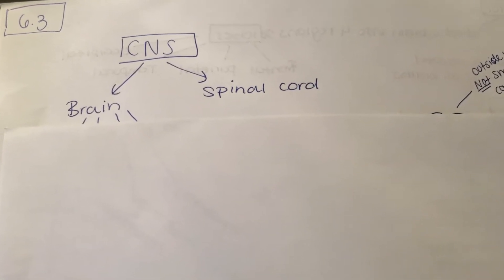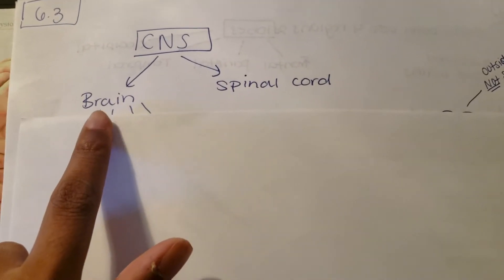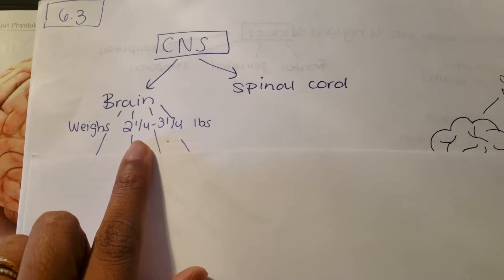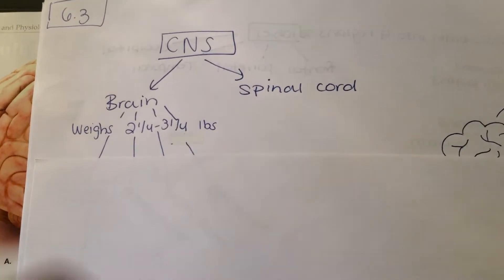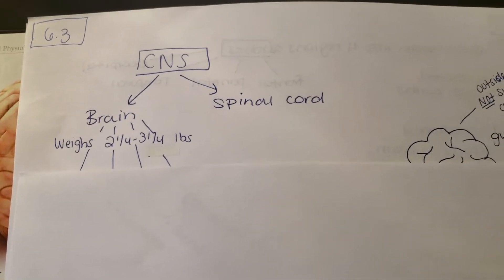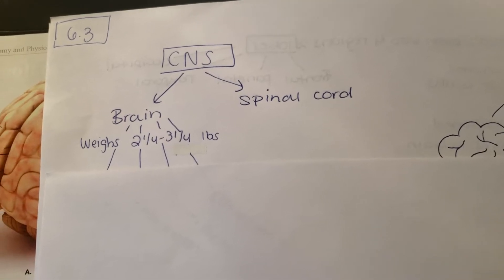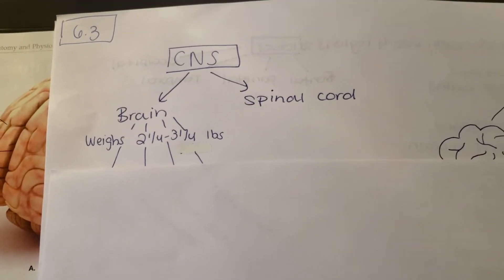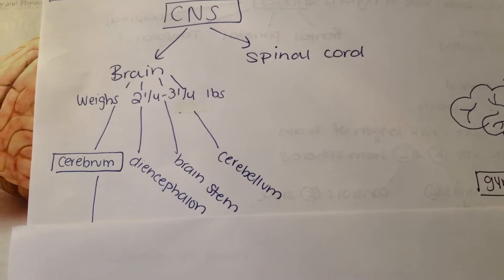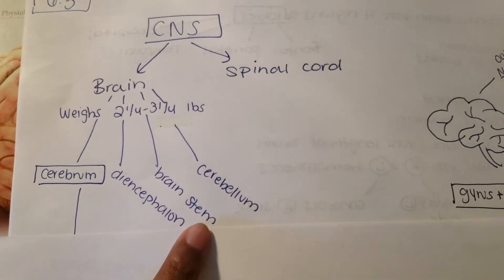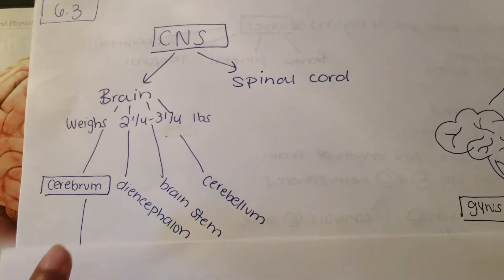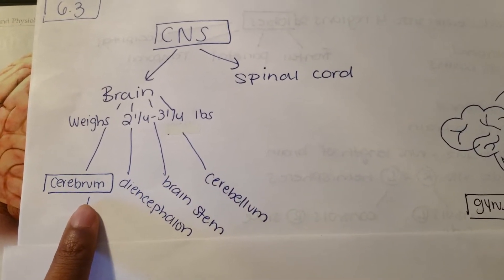Right now we're going to focus on the brain. A typical brain actually weighs between two-fourths to three-fourths of a pound, which relative to everything else in your body isn't that much. People have related brain size and weight to intelligence, but don't go comparing your brains to other people's. The brain is broken down into four regions: the cerebrum, the diencephalon, the brain stem — which is further broken down into three parts — and the cerebellum. Right now we'll focus on the cerebrum and its key functions.